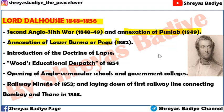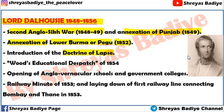Lord Dalhousie also annexed Lower Burma or Pegu — the lower part of Burma — in 1852. Then there was the Doctrine of Lapse, which I already discussed in detail. As you know, under the Doctrine of Lapse, if a king did not have a natural son, his adopted son would not inherit the kingdom — it would go to the British. This was introduced by Lord Dalhousie.